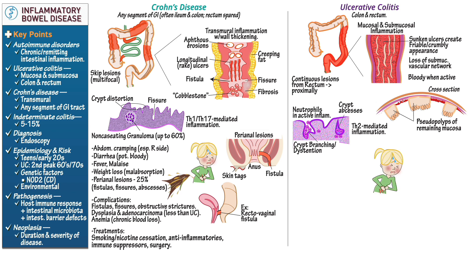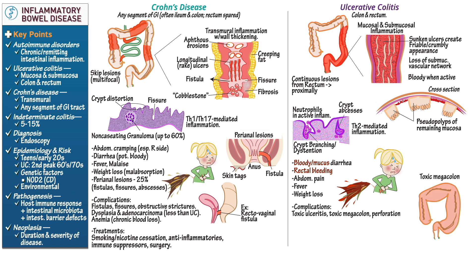Show that patients experience bloody diarrhea with rectal bleeding, much more so than in Crohn's disease. Patients also experience abdominal pain, fever, and weight loss. Complications include toxic ulceritis, toxic megacolon, and intestinal perforation. Dysplasia and adenocarcinoma can occur and are more likely when the entire colon is involved — pancolitis. Treatments include anti-inflammatories, immune suppressors, and colectomy. Patients should be warned that when they quit cigarettes, they are actually more likely to experience bouts of ulcerative colitis during that time frame.